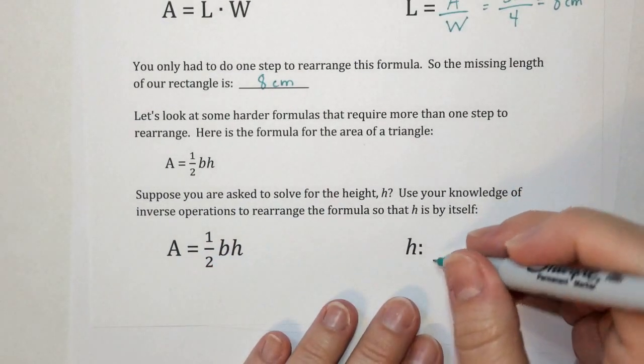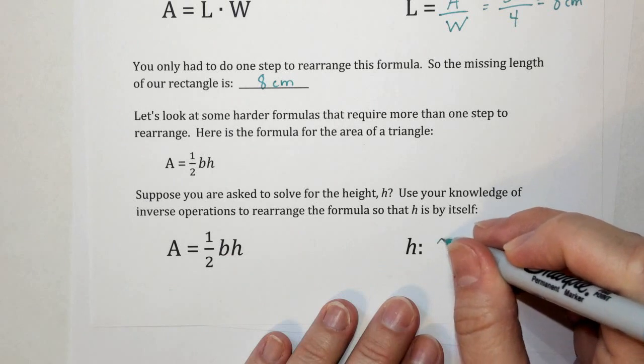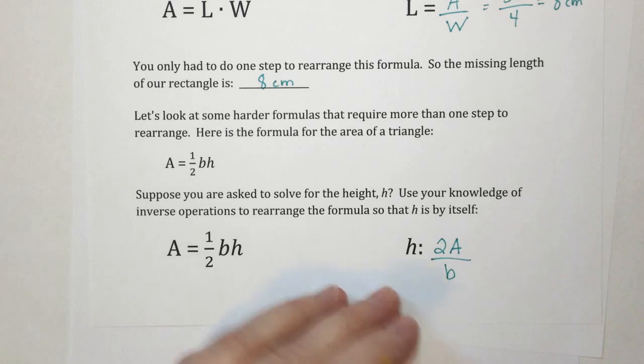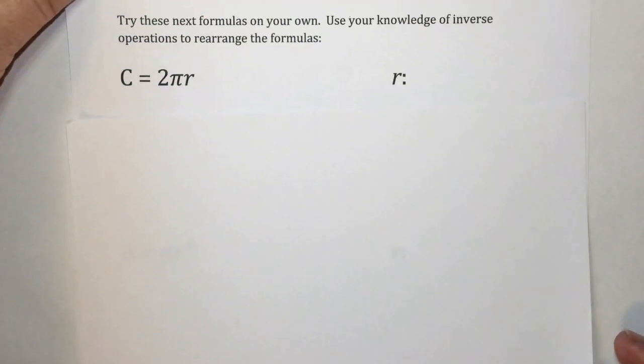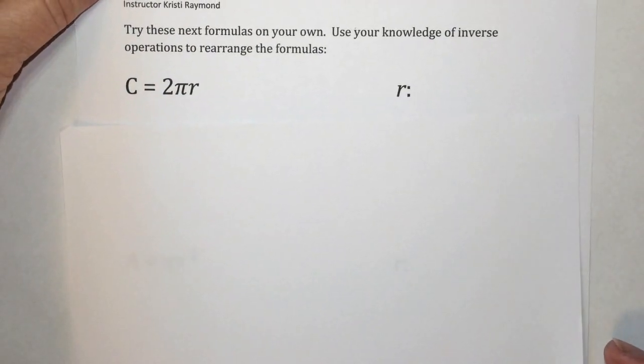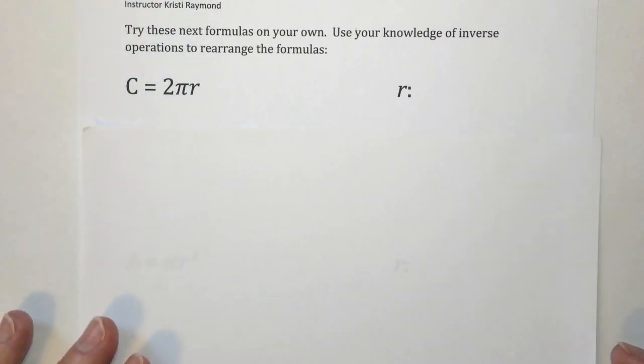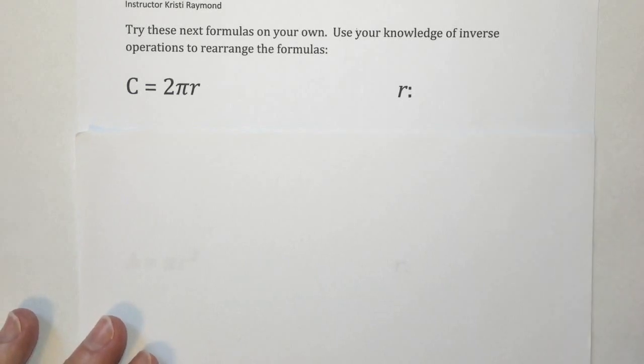We had H equals 2A over B. Now let's move on to the last page. I want you to try these few formulas on your own. Use your knowledge of inverse operations to rearrange the formulas. You can pause the video here and work on them. Or you can just wait a second and go along with me.